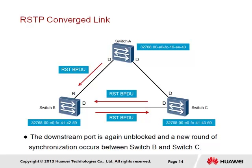Switch B will now assume switch A to be the root bridge and will begin the same proposal and agreement process for the downstream segment, using the same fundamental negotiation parameters as used within the original STP. Since the path cost is equal, the proposal and agreement will again fall back to the bridge ID for agreement on the designated switch for this segment.